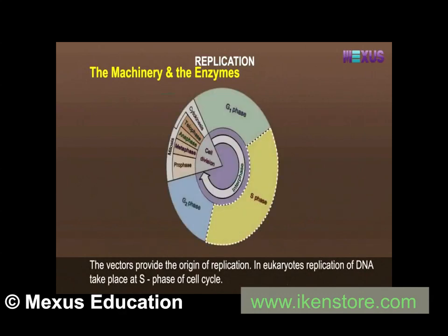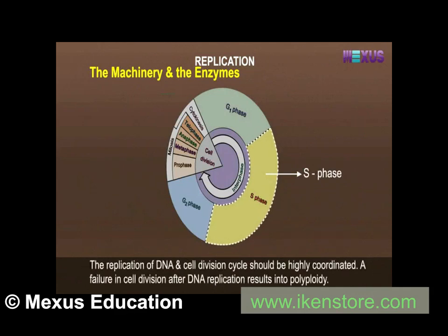In eukaryotes, replication of DNA takes place at the S phase of the cell cycle. The replication of DNA and the cell division cycle should be highly coordinated. A failure in cell division after DNA replication results in polyploidy.